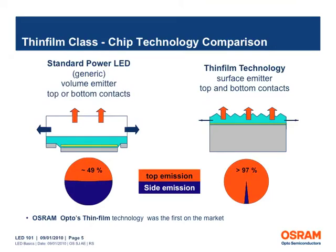The first generation of power LEDs from OSRAM Opto Semiconductors were volume emitters with top and bottom contacts. These LED packages had a top emission of approximately 49%, resulting in almost 50% of the light lost within the package. Subsequent advances in semiconductor technology have resulted in improved efficiencies. OSRAM Opto Semiconductors' thin film technology was the first surface emitter, which resulted in greater than 97% of the light being emitted from the top surface of the semiconductor chip.